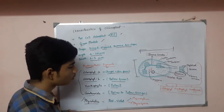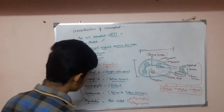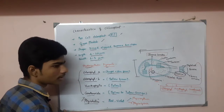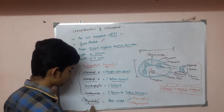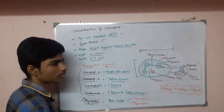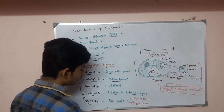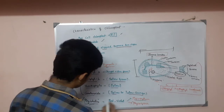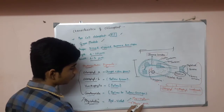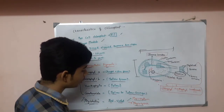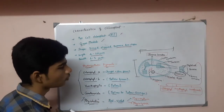Phycobillins are present in cyanobacteria, red algae, and cryptomonads, but are not present in plants. There are two types of phycobillins: phycoerythrin, which is red in color, and phycocyanin, which is violet in color. These are the major photosynthetic pigments which are involved in the photosynthesis process.